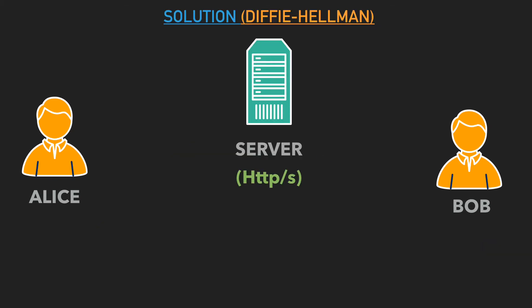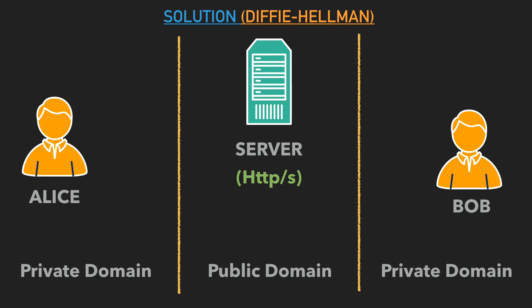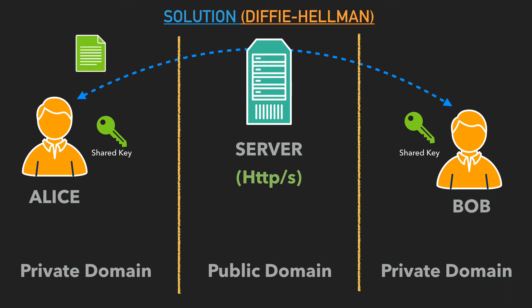This is exactly the solution that Diffie-Hellman proposed. Here we have Alice, the server, and Bob, all wanting to communicate using a shared secret. Whatever is passed through the public domain is visible to everyone, but whatever is in Alice's private domain is confined only to Alice, and whatever is in Bob's private domain is confined only to Bob. Diffie-Hellman proposes generating a shared secret key inside their individual private domains, which is then used to send messages between them.